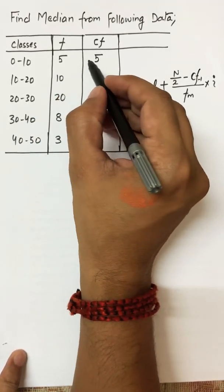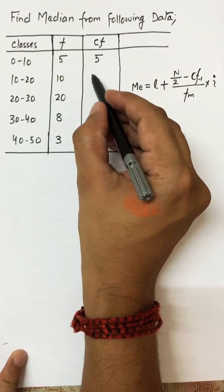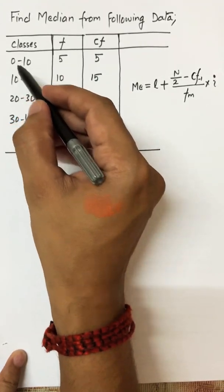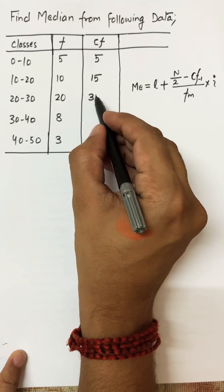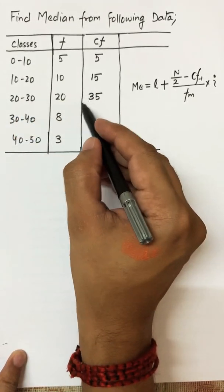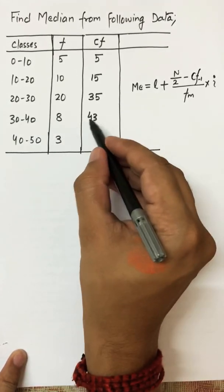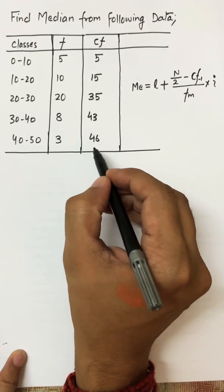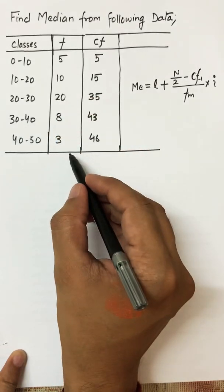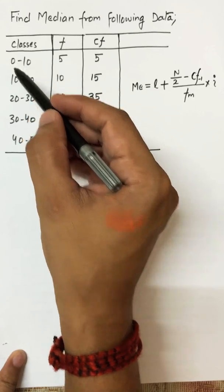The first cumulative frequency remains 5. The combined frequency from 0 to 20 is 10 plus 5, which is 15. From 0 to 30 it is 20 plus 15, making it 35. From 0 to 40 it is 35 plus 8, making it 43. The last is 43 plus 3, which is 46. The end result in cumulative frequency always equals the summation of F — 46 represents all frequencies falling within 0 to 50.